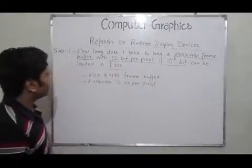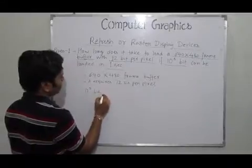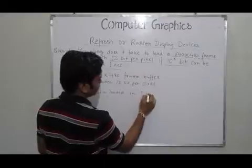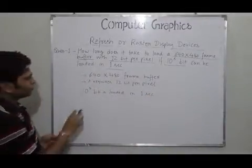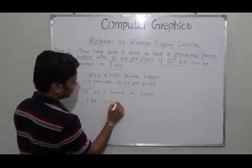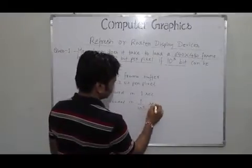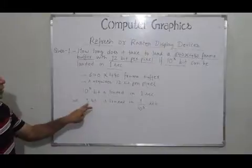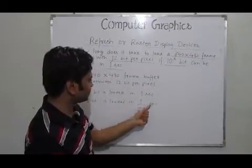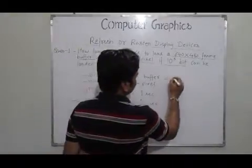We are provided that 10 to the power of 5 bits can be loaded in one second. From this data, we can determine that one bit can be loaded in 1 divided by 10 to the power of 5 seconds.